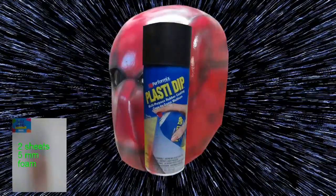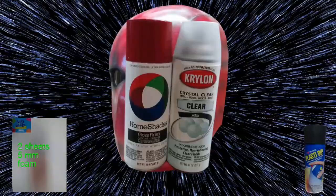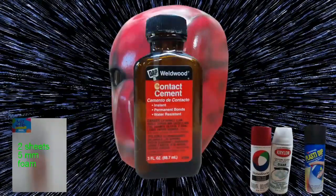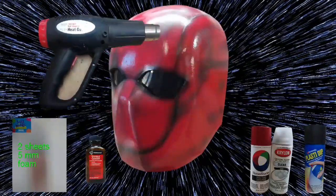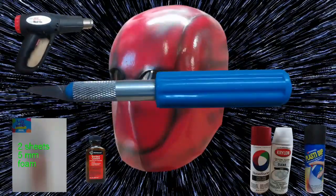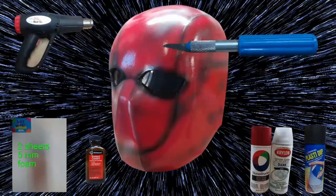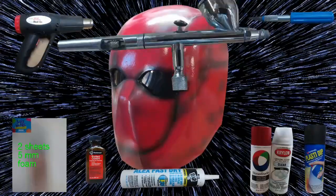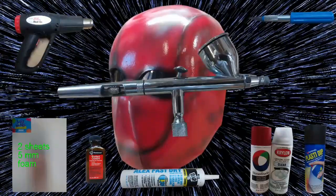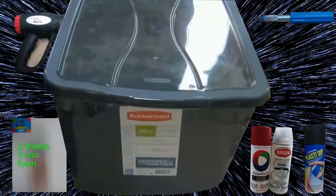Supplies used on this build were 2 sheets of 5mm foam, Plasti-dip, spray paint, contact cement, a heat gun, a razor knife, painter's caulk, an airbrush, and a transparent Rubbermaid tub.